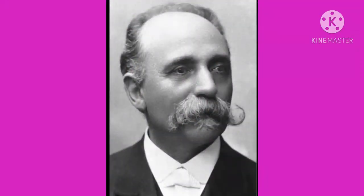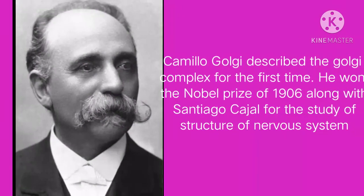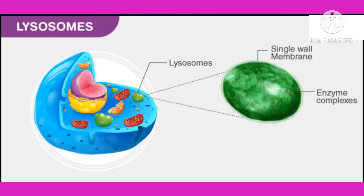Introduction to scientist: Camillo Golgi described the Golgi complex for the first time. He won the Nobel Prize of 1906 along with Santiago Ramón y Cajal for the study of the structure of the nervous system.